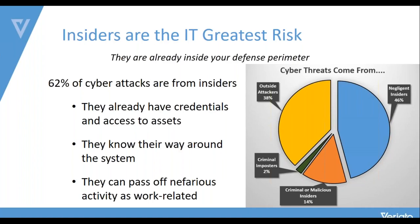So who are these individuals? Only 38% of threats come from attackers outside your organization. Of the remaining 62%: 2% are criminal imposters who actually get credentialed into your organization; 14% come from insiders with criminal and malicious intent; and 46% — this should definitely capture your attention — come from negligent insiders, employees who make legitimate mistakes. How do we capture those mistakes? How do we make sure those things are not happening? That's some of what we're going to talk about today.